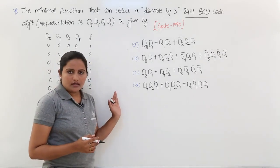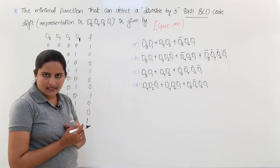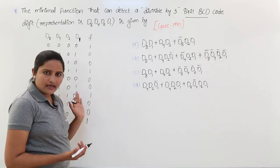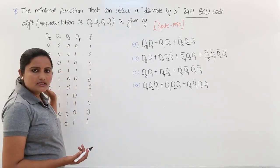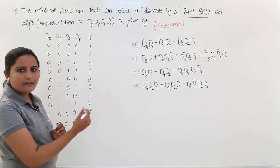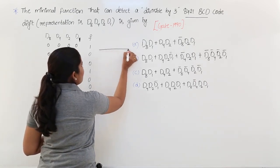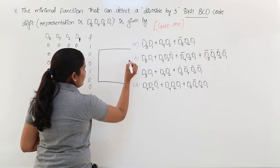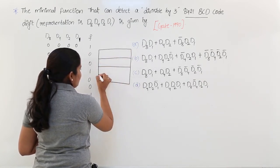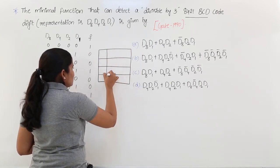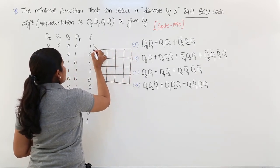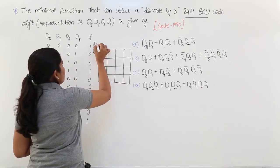Now it is time to define the Boolean function using a K-map. Since we have 4 input variables (d8, d4, d2, d1), we need a 4-variable K-map with 16 boxes. I am setting up the 4-variable K-map with d8, d4 on one axis and d2, d1 on the other, with combinations 00, 01, 10, 11 on each side.